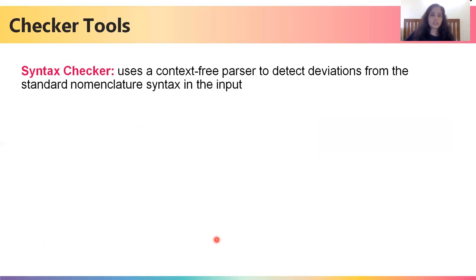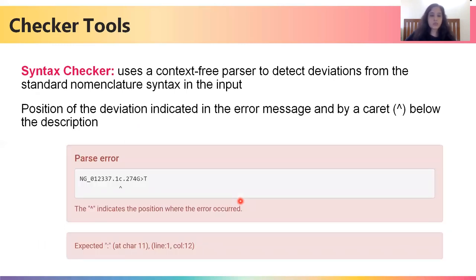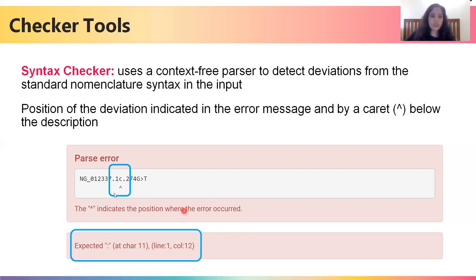The next checker tool is the syntax checker. If you are new to HGVS notations, you can use this tool and it will tell you whether the syntax is accurate. In case of an error, it will highlight where the error is using a caret symbol and the line below will tell you what the error is — making it extremely simple for you to correct your nomenclature.